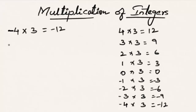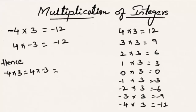In the earlier example on the number line we know that 4 times minus 3 is also minus 12. Hence minus 4 multiplied by 3 equals 4 multiplied by minus 3, that is minus 12. In the same manner, minus 5 multiplied by 4 equals 4 multiplied by minus 5, which equals minus 20.